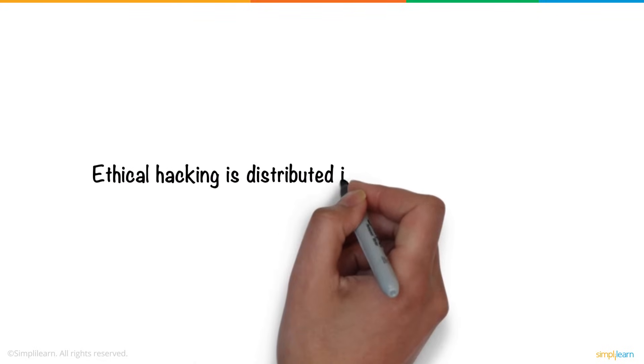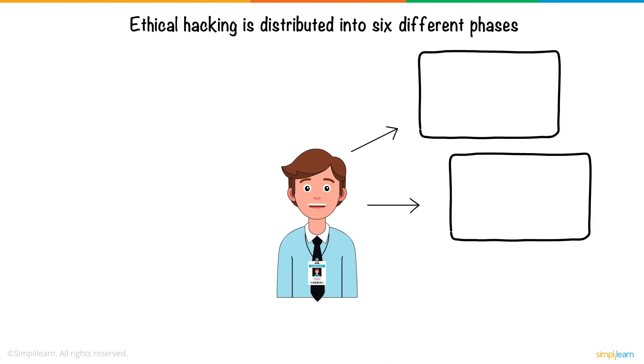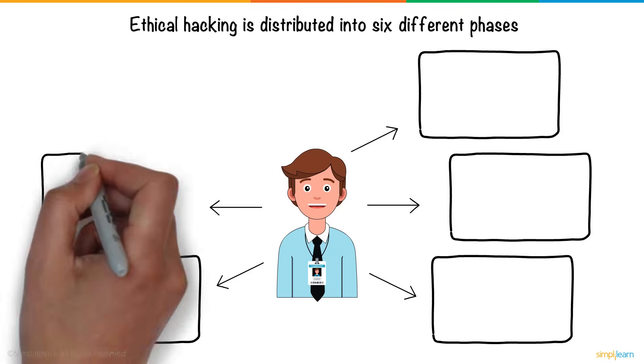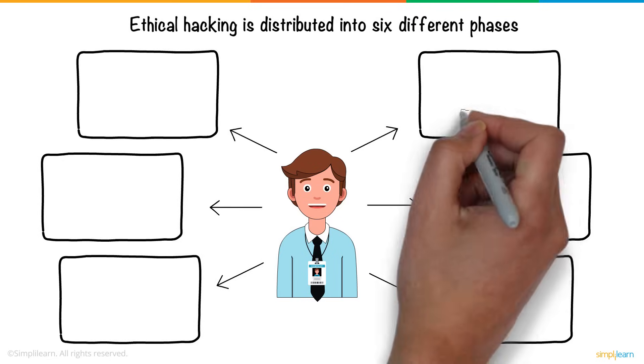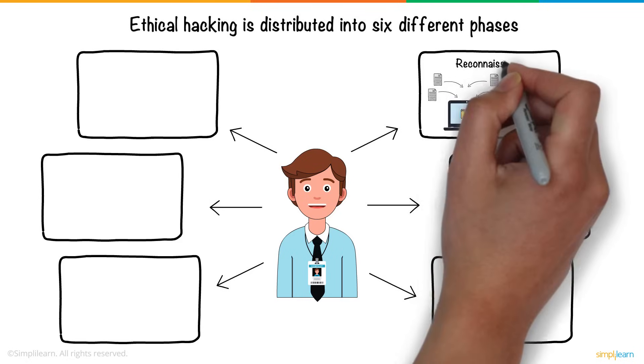Ethical hacking is distributed into six different phases. Let us look at these phases step-by-step with respect to how John, our ethical hacker, will act. Before launching an attack, the first step John takes is to gather all the necessary information about the organization's system that he intends to attack. This step is called reconnaissance.